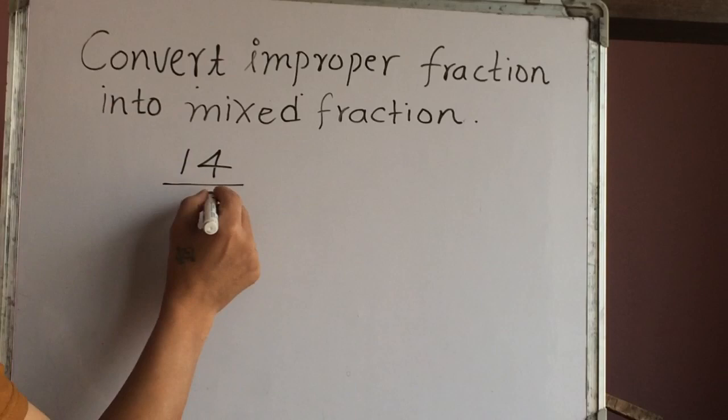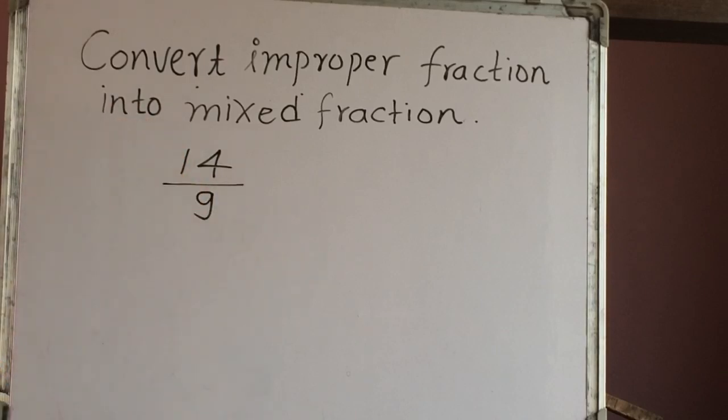14 out of 9. This is improper fraction because the numerator is greater than denominator. So how can we convert this into mixed fraction?